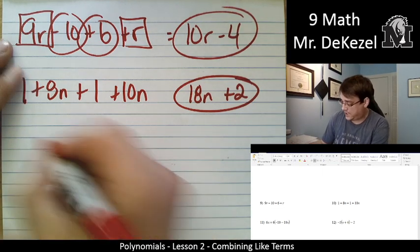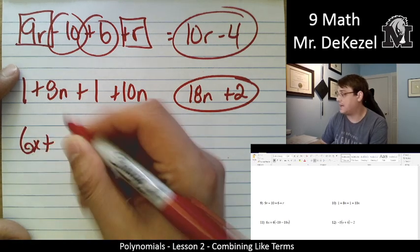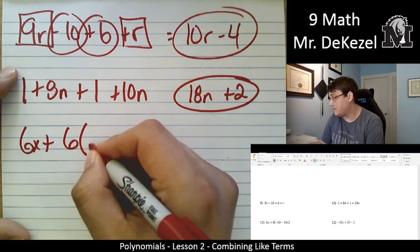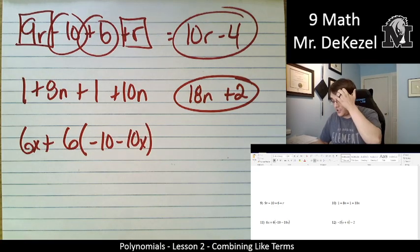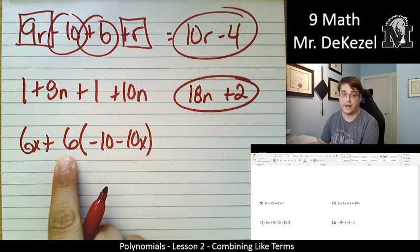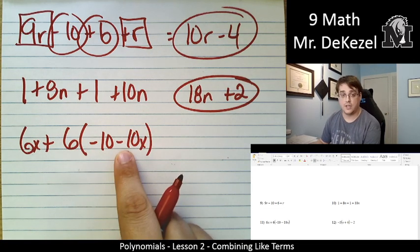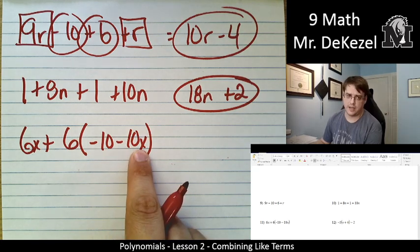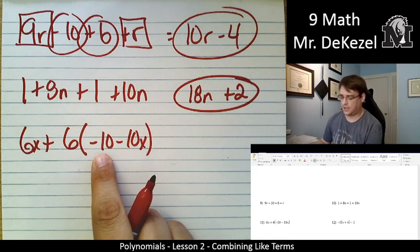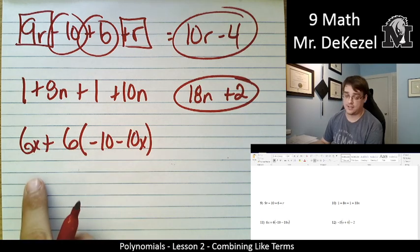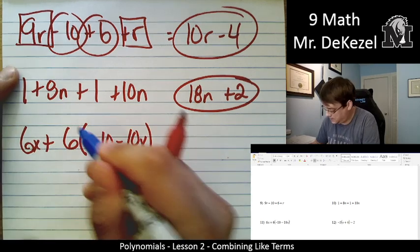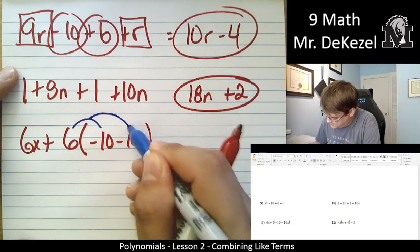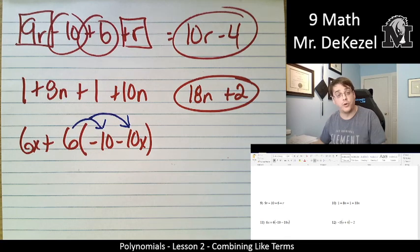Now we get to 6x plus 6 bracket minus 10 minus 10x. A refresher here when you have something that is multiplied by two different terms in a bracket. These can't be combined because this is 0th degree and this is 1st degree. We need to get rid of these brackets though. So we are going to multiply this 6 by both things in here. It applies to both of those values. And that gets rid of the brackets for us.